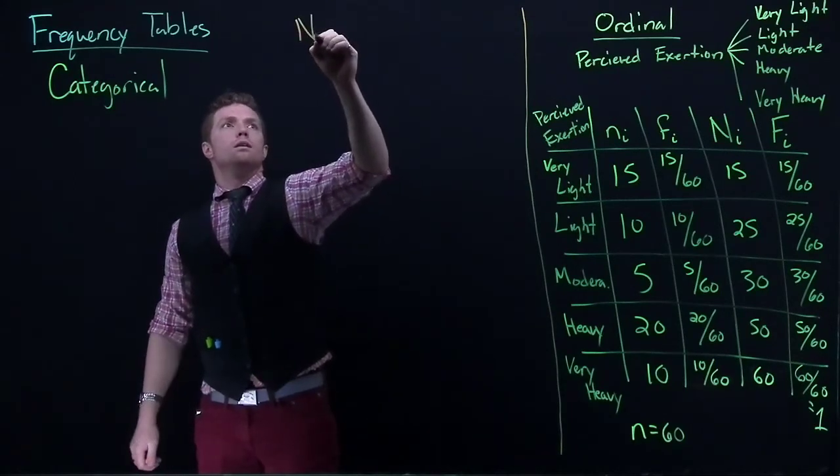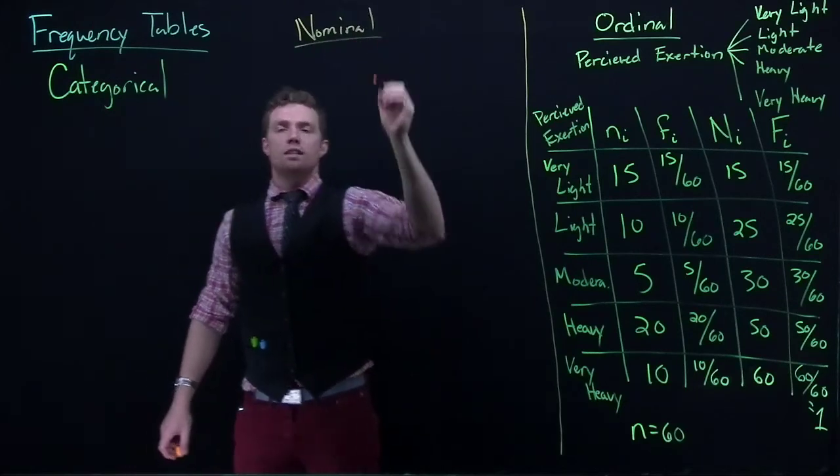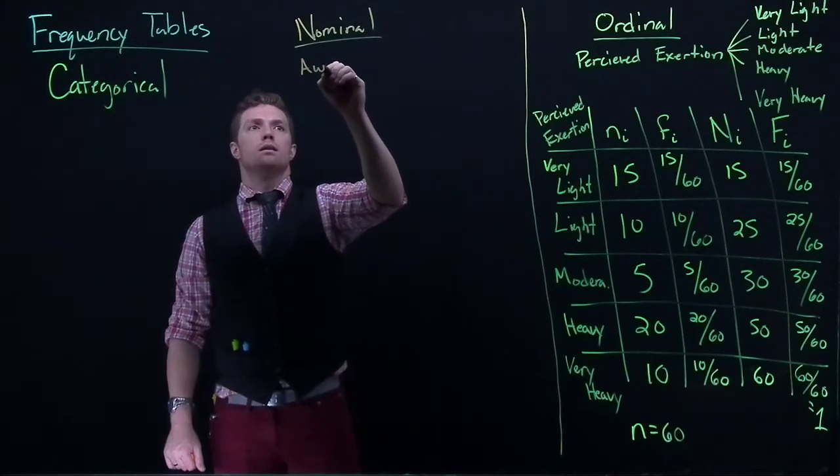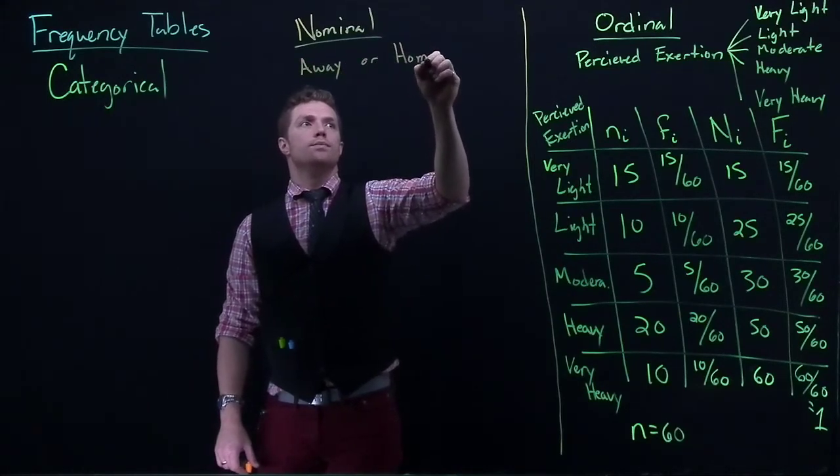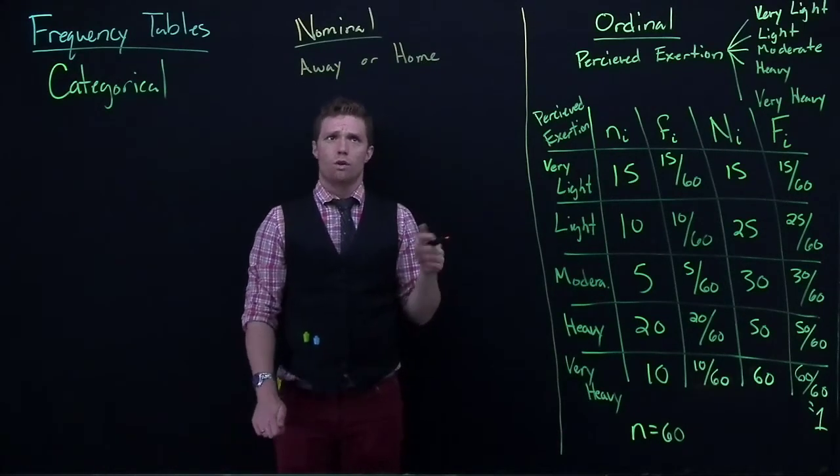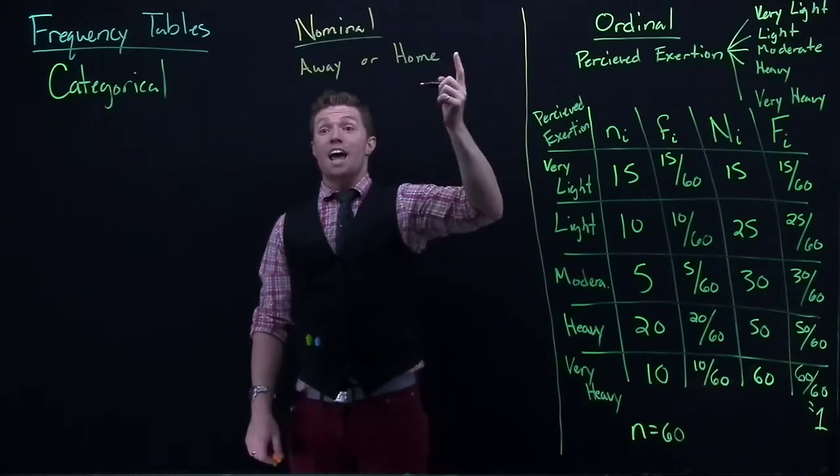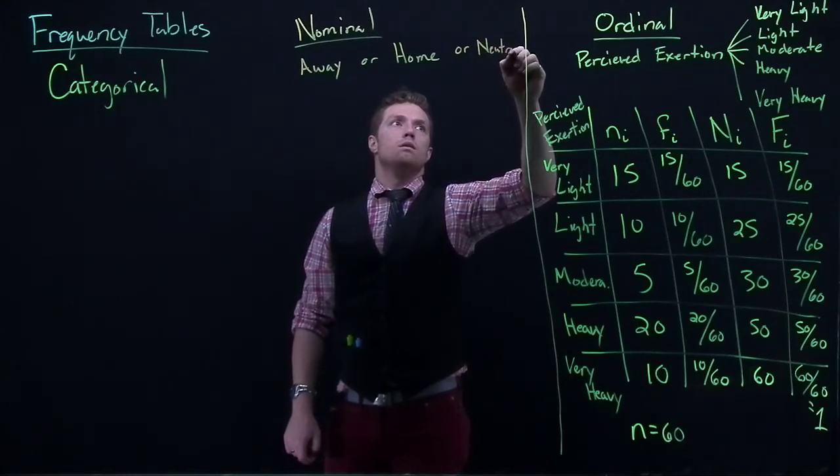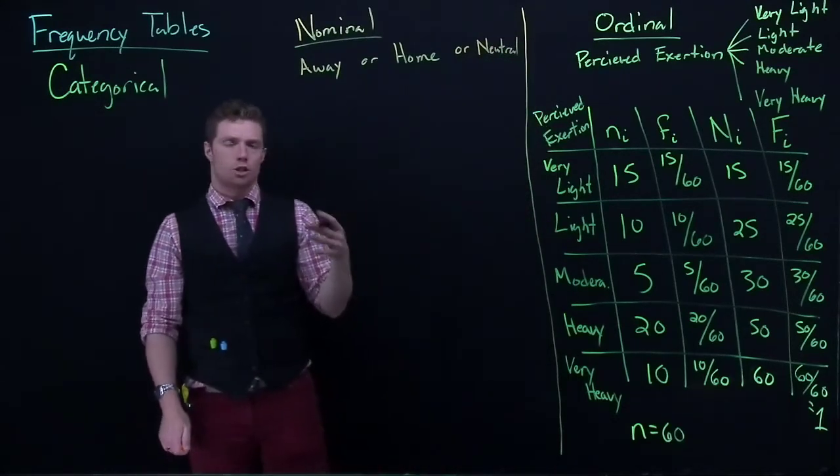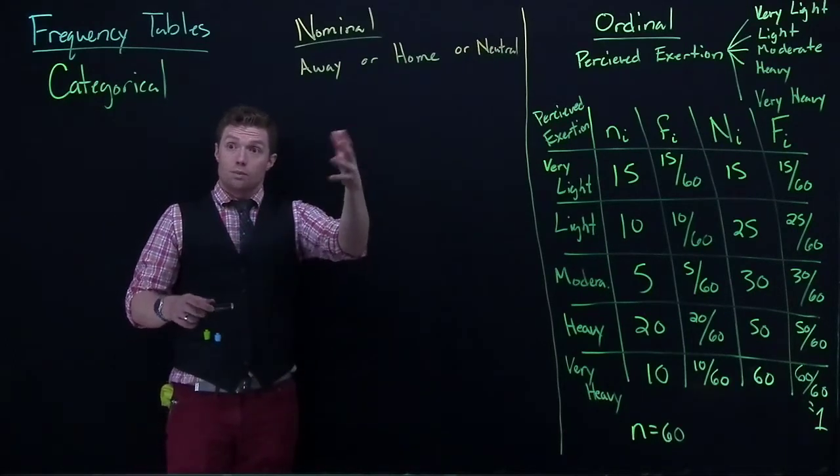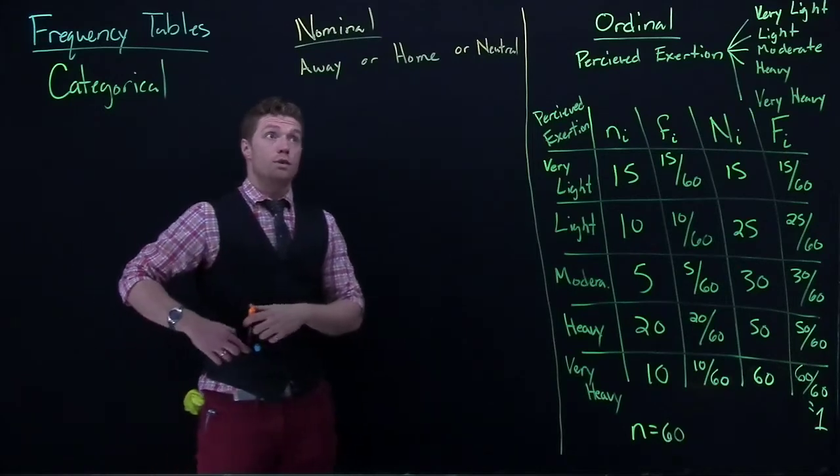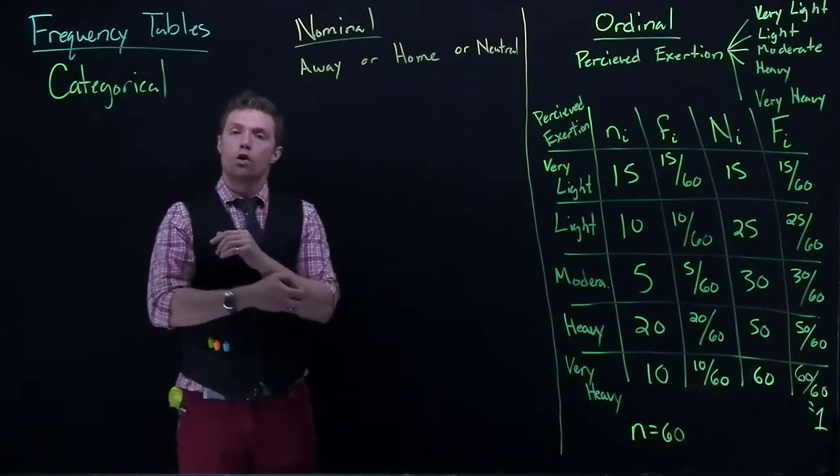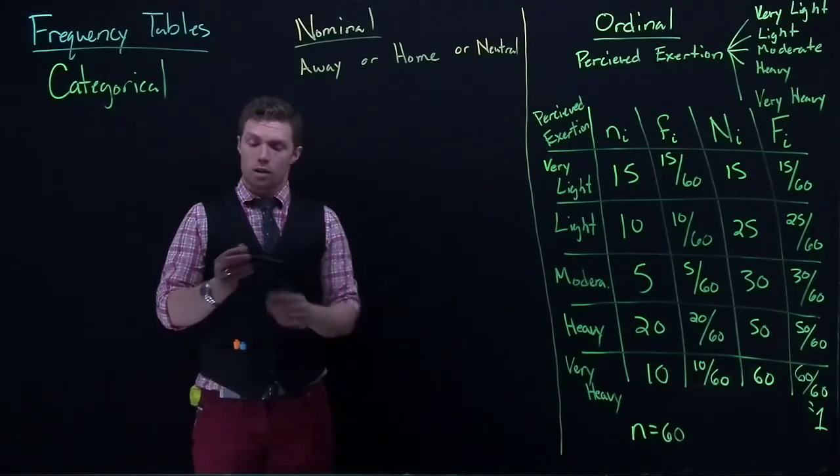So let's take a look at some nominal data. So for our nominal, of these 60 games, maybe we could talk about how many games were away, or home. It doesn't matter if the away games are first, or maybe we can add in another one, away, home, or neutral. Maybe they go to Europe for an exhibition game or China for some exhibition game. Okay, well, we can handle this. And it's nominal. It doesn't matter if we put the neutral first. It doesn't matter if we put home first or the away first. There really isn't an order to these ones.